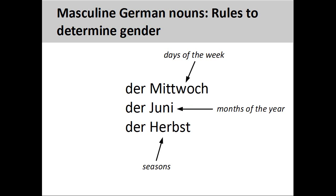Days of the week, such as 'Mittwoch' (Wednesday), and months of the year, such as 'Juni' (June), are masculine. Most seasons are also masculine nouns — for example, 'Herbst,' meaning fall.